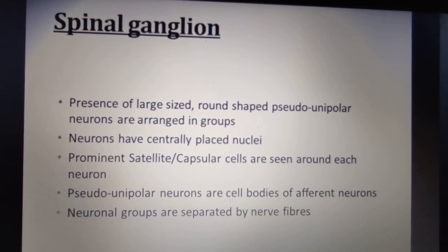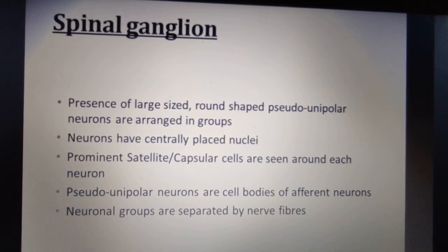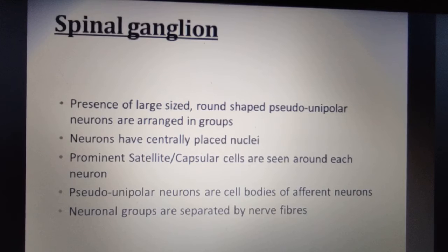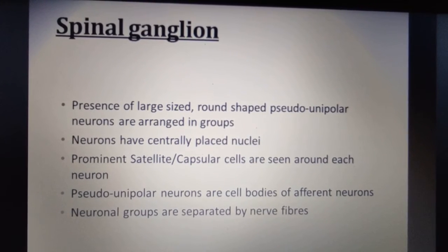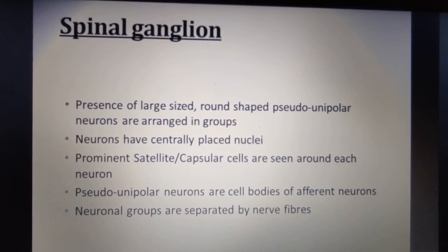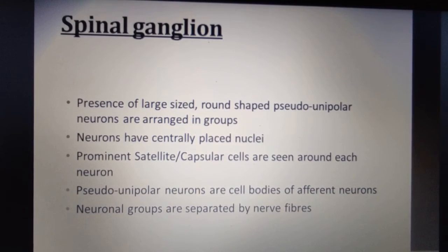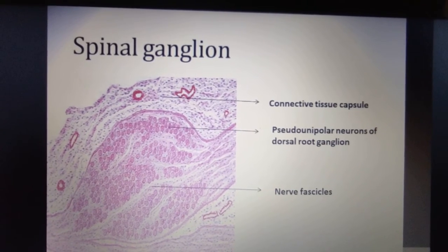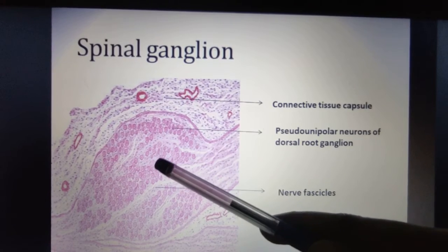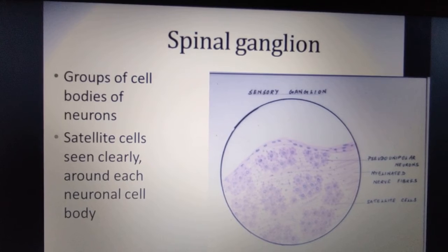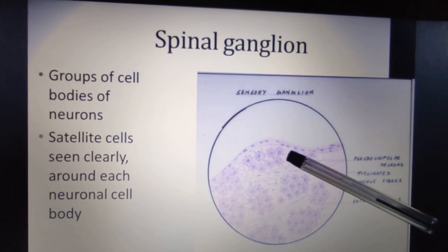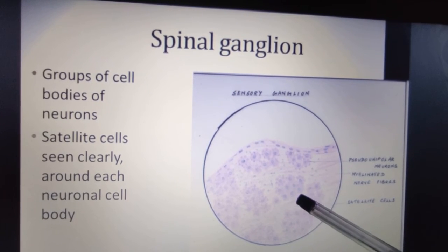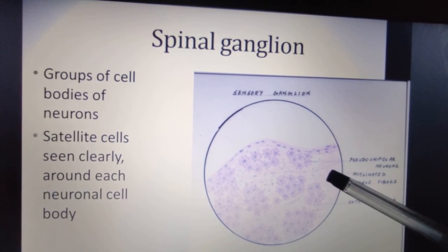The spinal ganglion contains large-sized, round-shaped pseudo-unipolar neurons that are centrally placed, with prominent satellite cells around each neuron. The neuronal groups are separated by nerve fibers. In the diagram, you can see the neurons arranged in groups with satellite cells clearly visible around the neuronal cell body, along with myelinated nerve fibers.